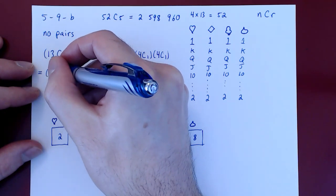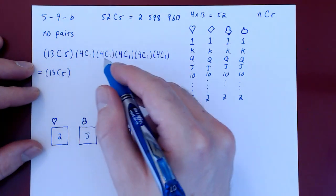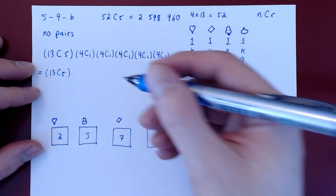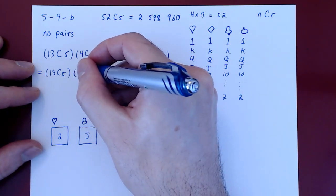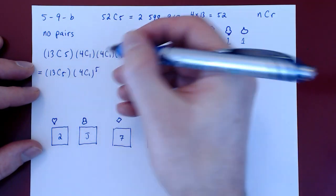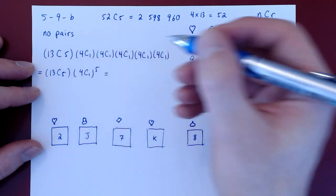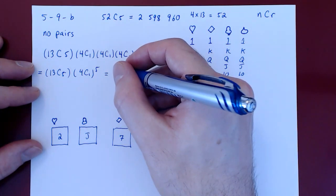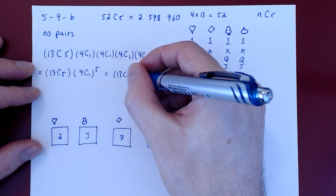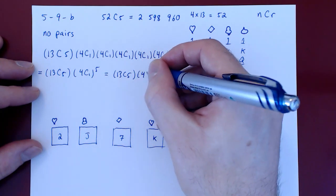That's 13 choose 5, times 4 choose 1 to the fifth power. We can simplify further. Four choose one is obviously four. So 13 choose 5 times four to the fifth.